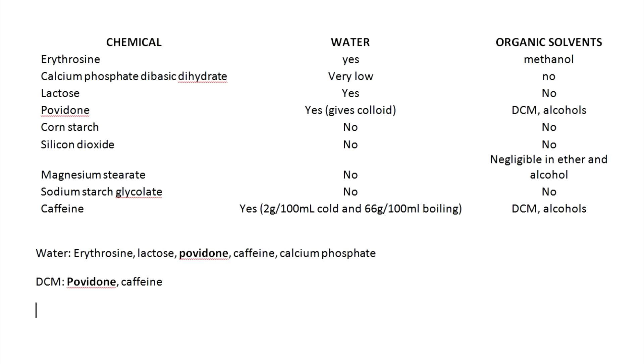At this point we know we're able to isolate a mixture of povidone and caffeine, but how do we separate those? Knowing that it's possible to recrystallize caffeine from either alcohol or water, we look at the list and see that povidone is soluble in both alcohol and water. So to deal with the povidone, we'll just have to recrystallize the caffeine from either alcohol or water.